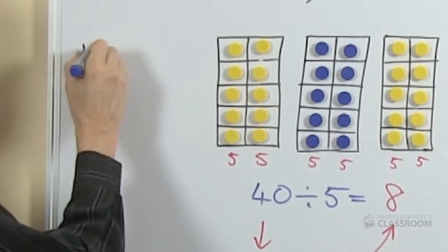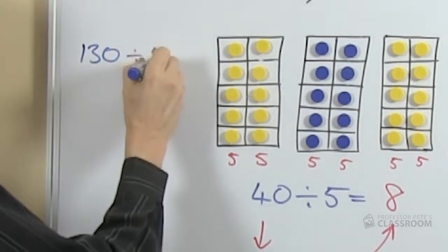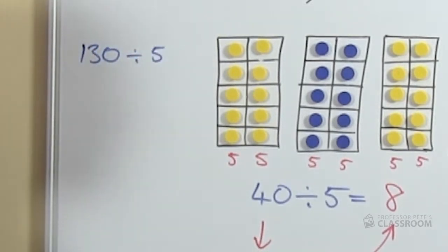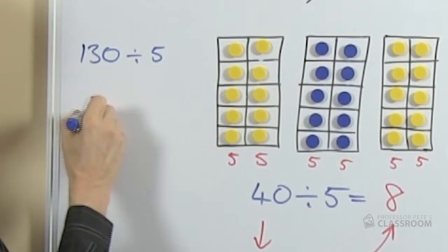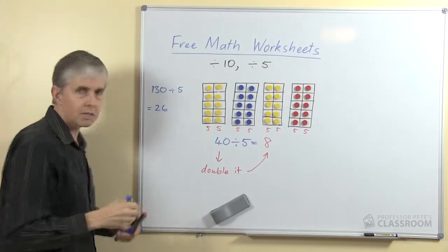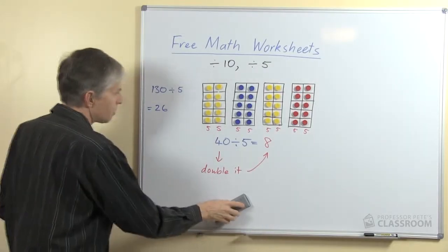So we could go further than this. Say here's an example: 130 divided by 5, what would the answer be? Well, it's going to be double 13, or 26. So it works for any multiple of 10.